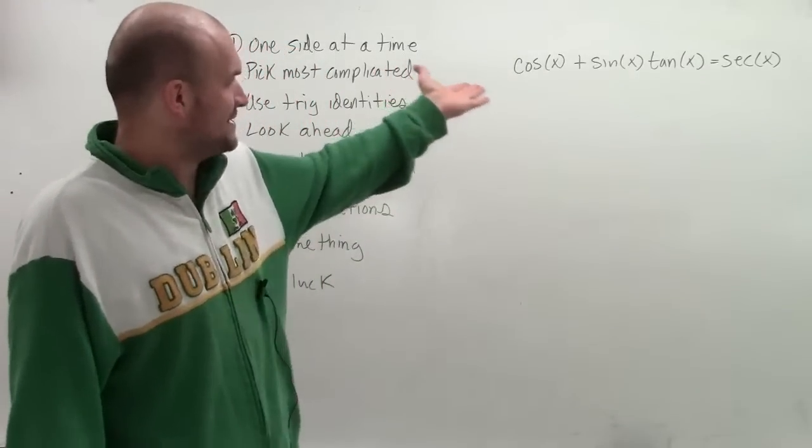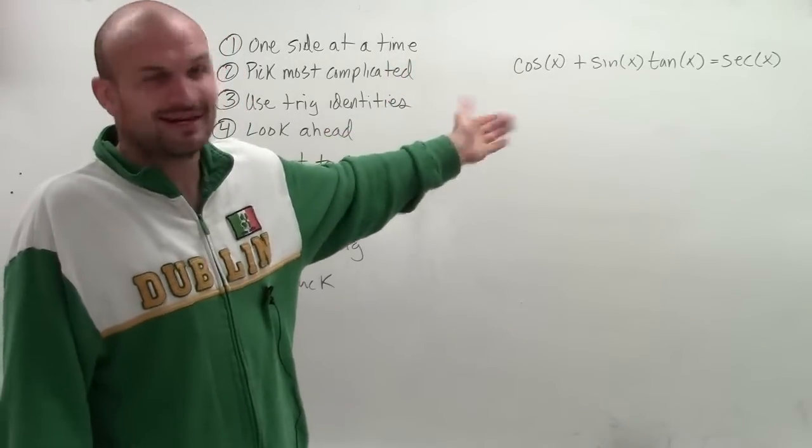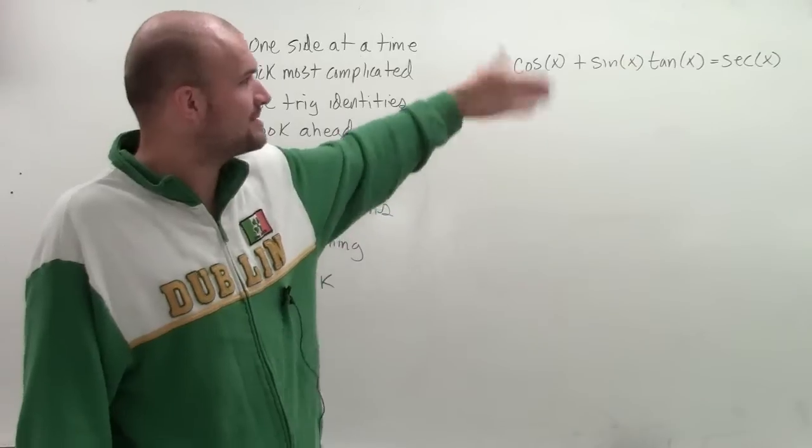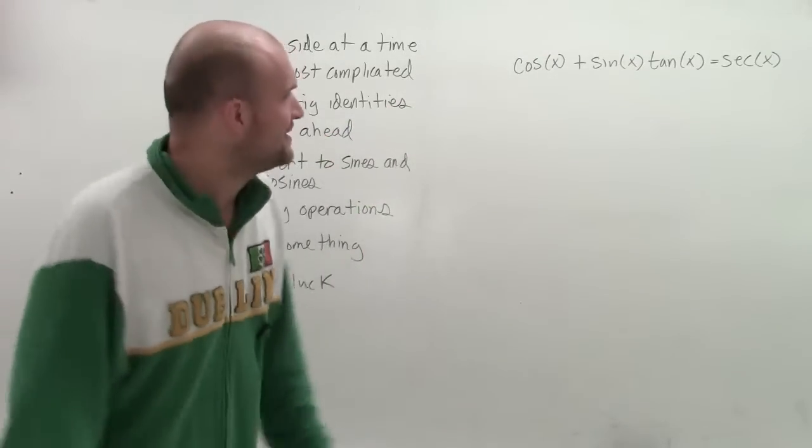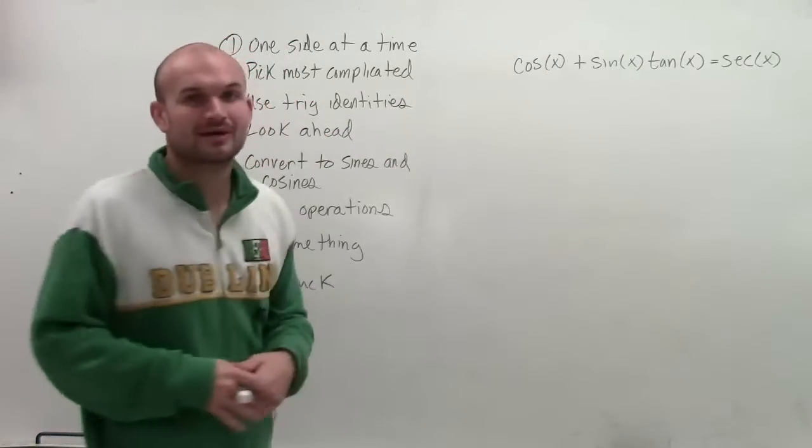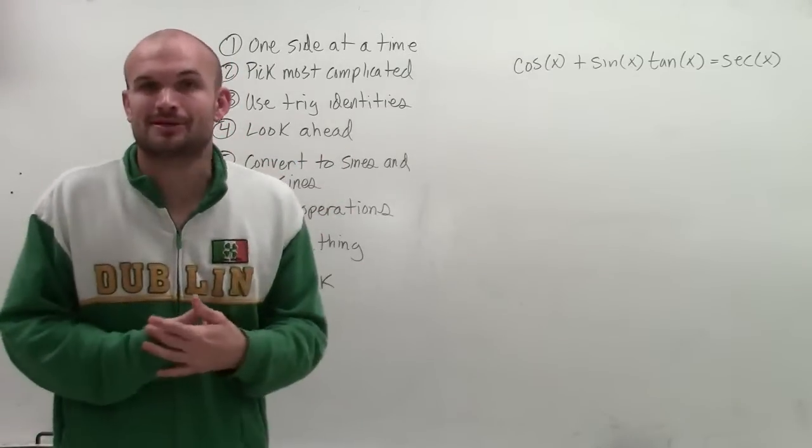Well, here we have an addition, we have multiplication, we have three trigonometric terms. And on the right side, we only have one. So we're definitely going to want to go and work on the left side. And we want to see what identities can we use?